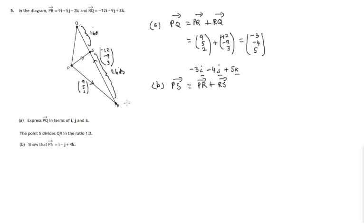So this journey that we've gone from R to S will actually be two thirds of the whole journey from R to Q. And now we know all the components of the parts of this journey: from P to R is 9, 5, 2. Two thirds of journey from R to Q we know is negative 12, negative 9, 3.